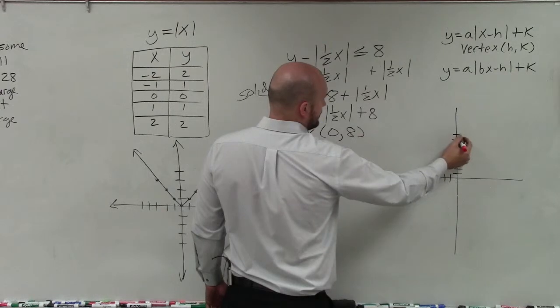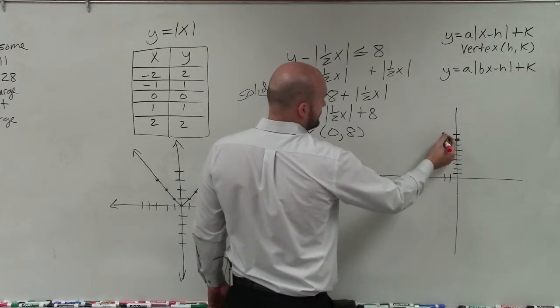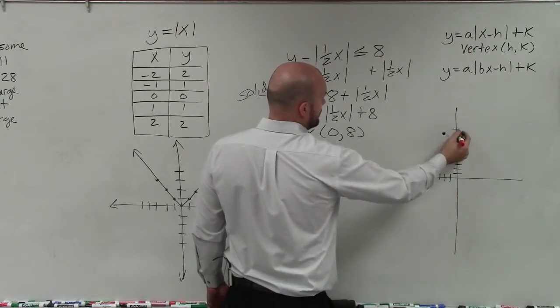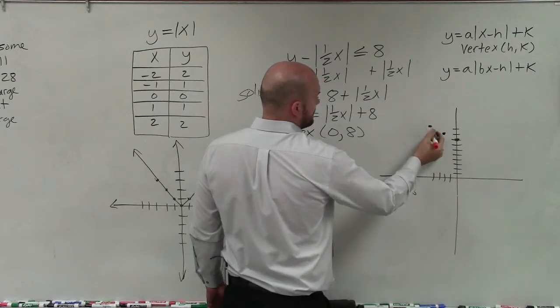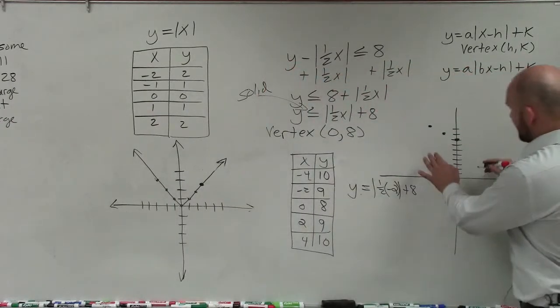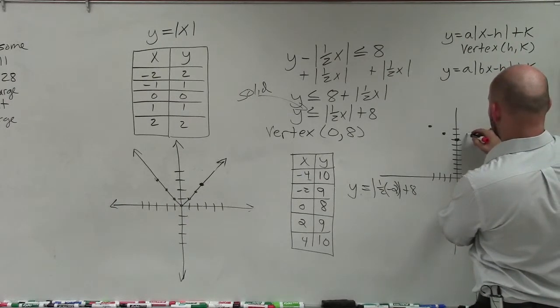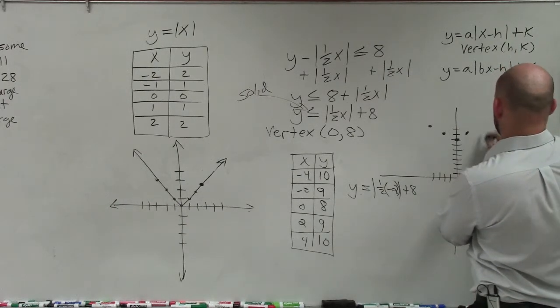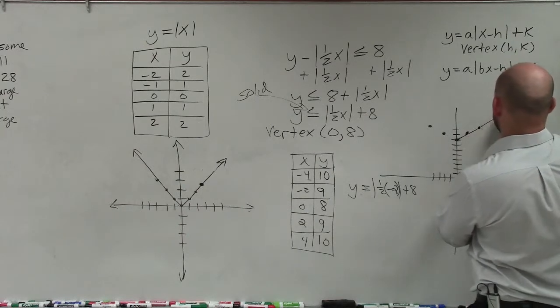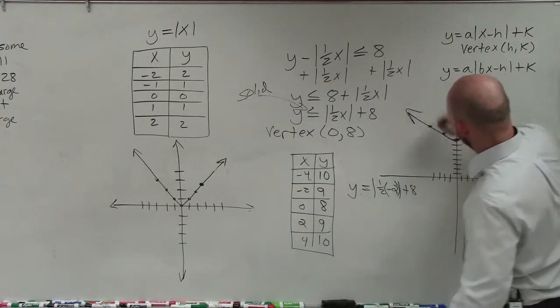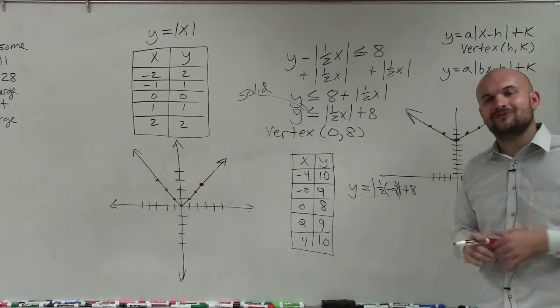So negative 2 is 9 and negative 4 is 10. Then I can just go over 1, 2, 3, 4, go over and reflect these points. And then, ladies and gentlemen, I just connect. And there you go, that is my wonderful absolute value.